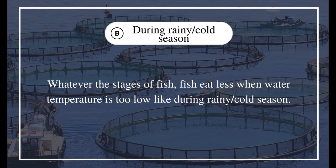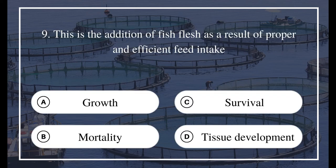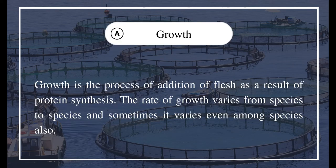Question 9: This is the addition of fish flesh as a result of proper and efficient feed intake — A) Growth, B) Mortality, C) Survival, D) Tissue development. The answer is A) Growth. Growth is the process of addition of flesh as a result of protein synthesis. The rate of growth varies from species to species and sometimes even among individuals of the same species.